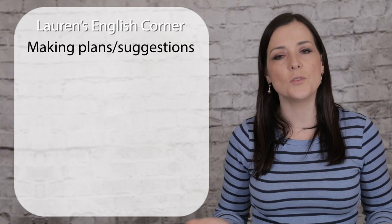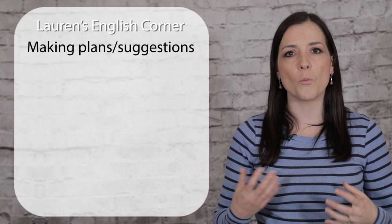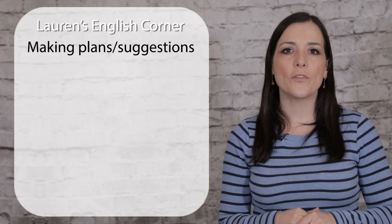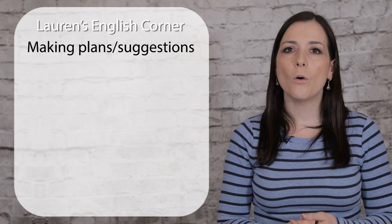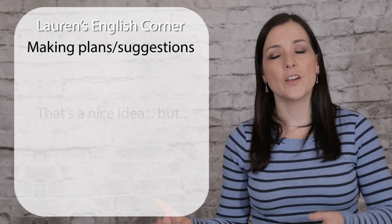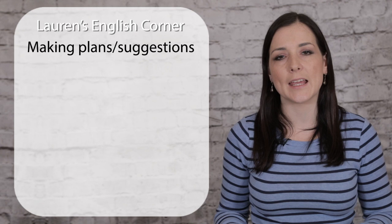Another way to give slight agreement — usually because we don't want to upset someone or bluntly say no — is to use words like "maybe, but" and then give the reason why it might not be the best idea. Or you could say "that's a nice idea, but I've heard it's going to rain." Or "maybe, but perhaps we could do it later — perhaps we could do it next month after payday." So those are some examples of how we can agree or disagree when making plans with friends.